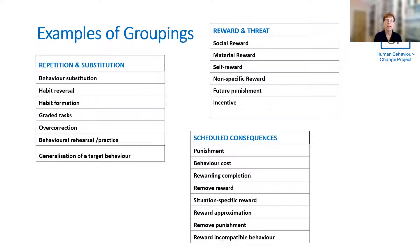Here are examples of groupings. We have repetition and substitution as one group, reward and threat as another, and scheduled consequences as another. And you can have a look at the different items within those.